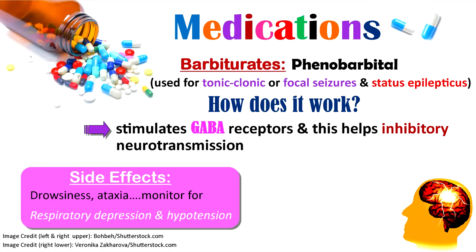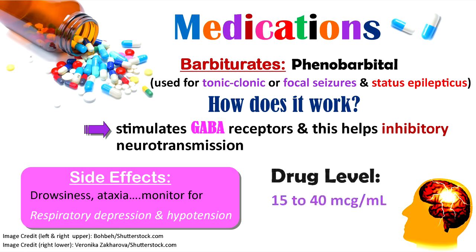The first anti-seizure medication category is barbiturates. A popular barbiturate is phenobarbital, used to treat tonic-clonic seizures, focal seizures, and status epilepticus. It works by stimulating GABA receptors, promoting inhibitory neurotransmission and decreasing brain excitation. Side effects include drowsiness and ataxia. As a nurse, watch for respiratory depression and hypotension. The therapeutic drug level is 15 to 40 micrograms per milliliter.